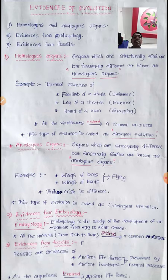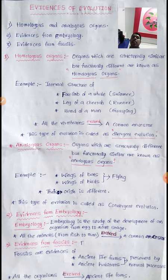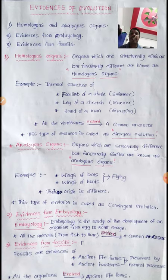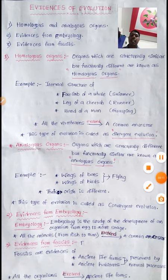Their origin is different — they are structurally different but functionally similar, and their origin is also different. This type of evolution is called convergent evolution. That means they evolved from different ancestors but show the same function.